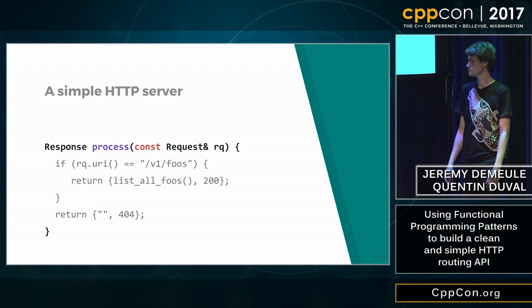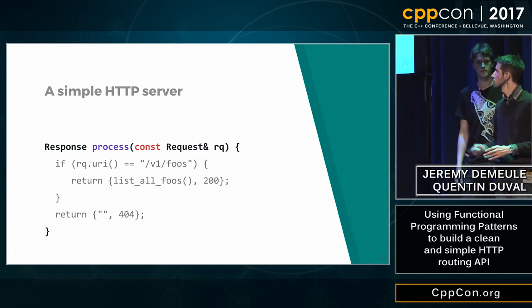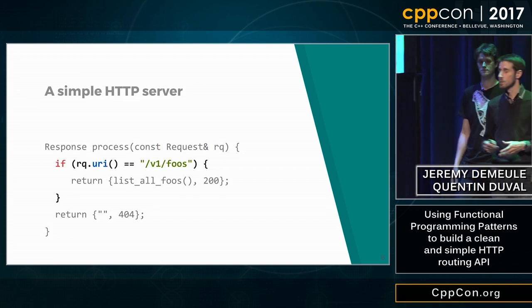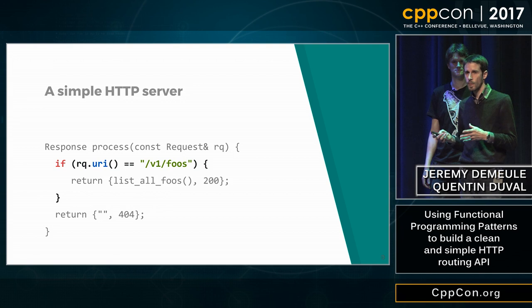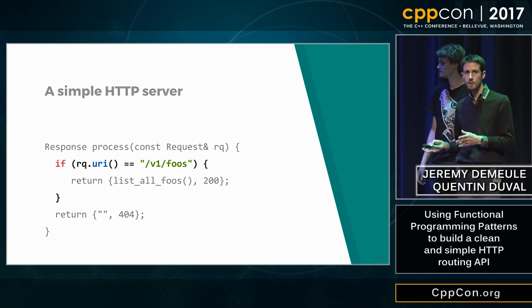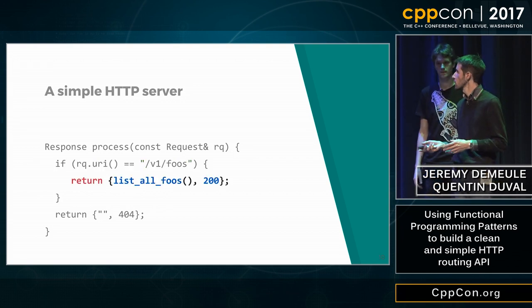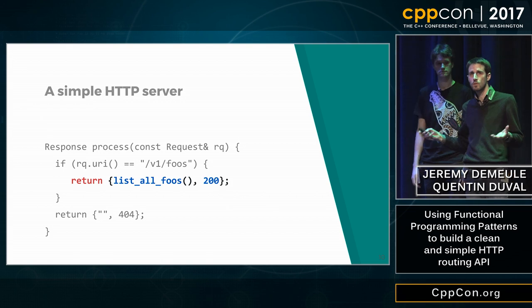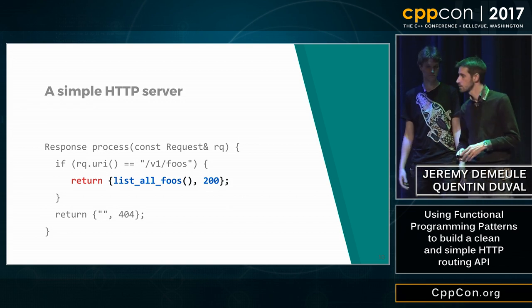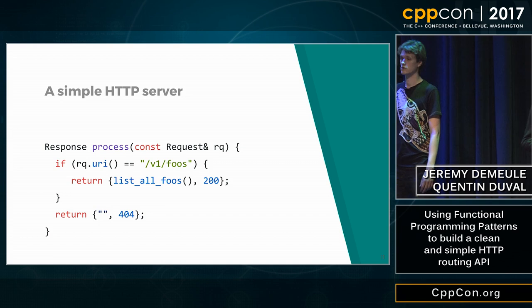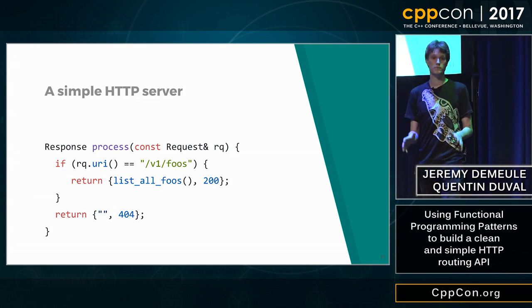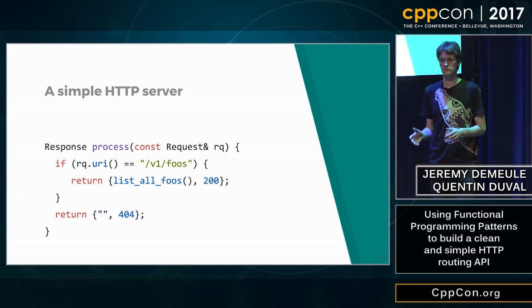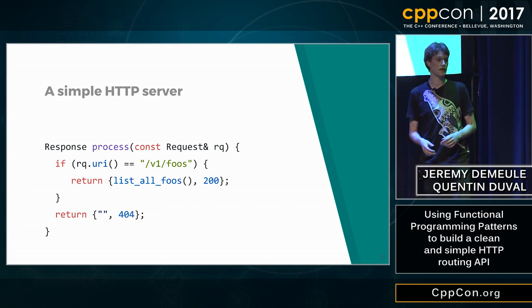For this simple purpose, we can start with a simple process function which takes a request and returns a response. Inside the function, we look at the URI inside the request and match exactly what we expect. Then we can just return the response by calling the right code with the correct status. This is the resulting code for just a simple request — it's readable. Let's try something a bit more complex and add a second route.